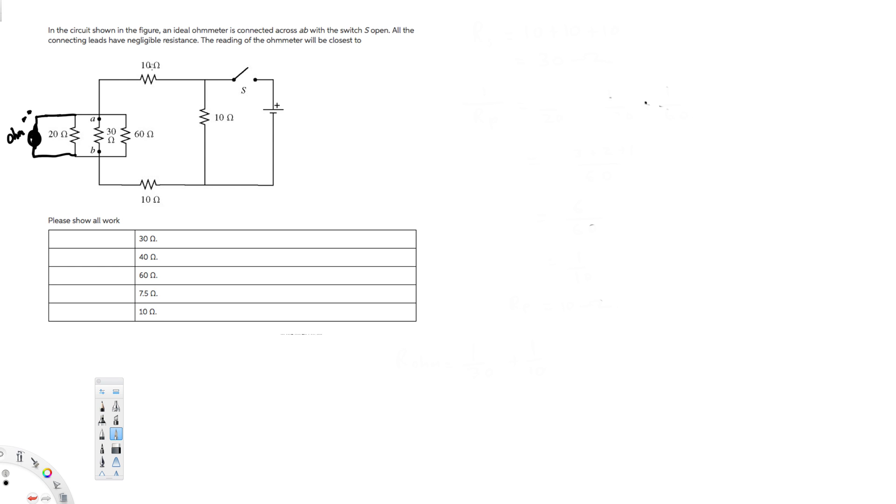So maybe we can just put a direct line ohmmeter, and this is ohmmeter. And let's calculate the values. So here we have, let's calculate the series first. See, we directly add them. These three are in series.